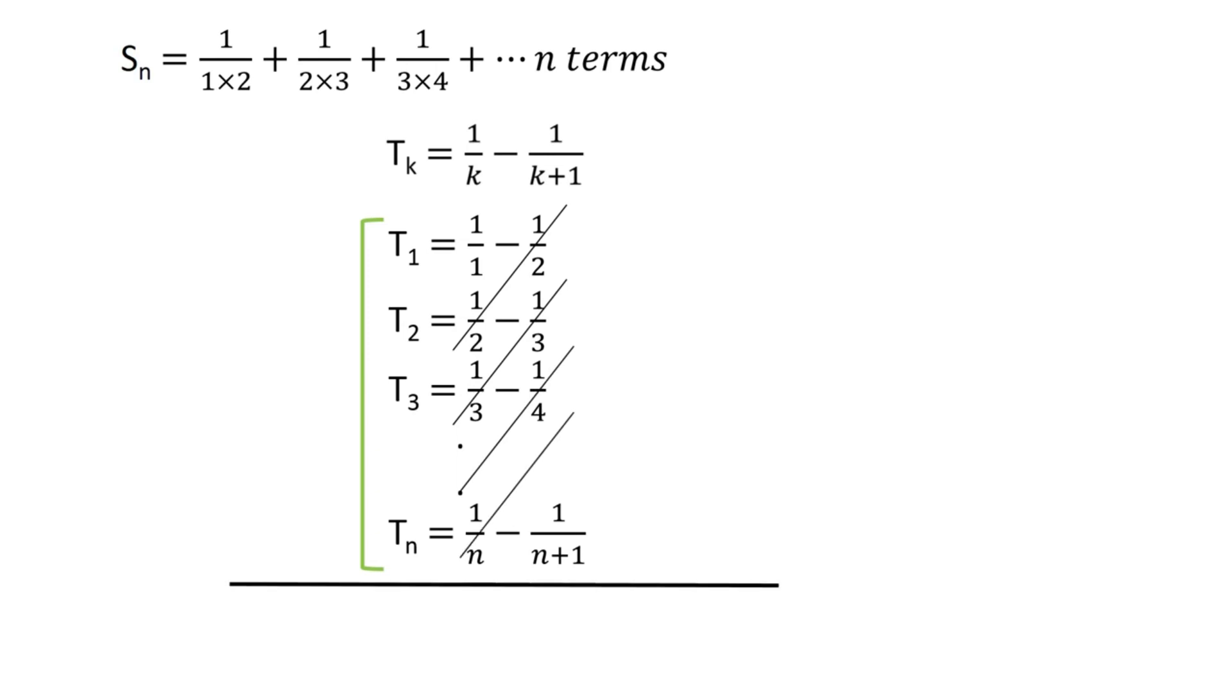We are left with T1 plus T2 plus T3 and so on up to Tn, which is Sn, equals 1 minus 1 upon n plus 1.